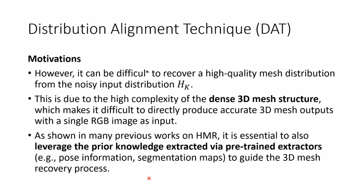However, it can be difficult to recover a high-quality mesh distribution from the noisy input distribution using only the standard diffusion process. This is due to the high complexity of the dense 3D mesh structure, which makes it difficult to directly produce accurate 3D mesh outputs with a single RGB image as input. As shown in many previous works on HMR, it is essential to also leverage the prior information extracted via pre-trained extractors, such as pose information, segmentation maps, and so on, to guide the 3D mesh recovery process.